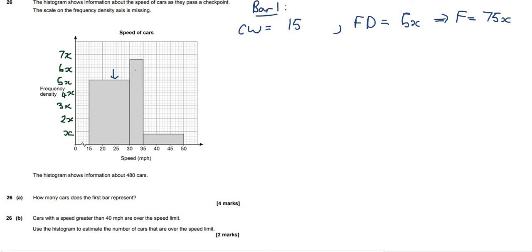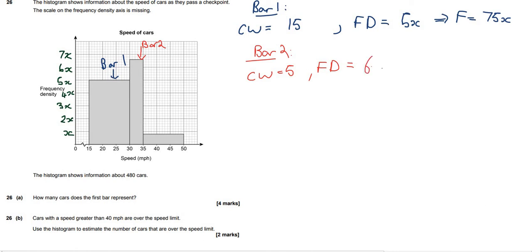This histogram is complete, so there are no more bars to add. Bar 2: the class width is 5. The frequency density is in between 6x and 7x. Because there are 5 squares between 6x and 7x, each square represents 0.2x. So the frequency density for this bar is 6.6x. Multiplying them together we get the frequency, which is 33x.